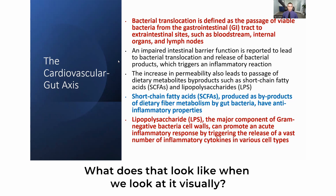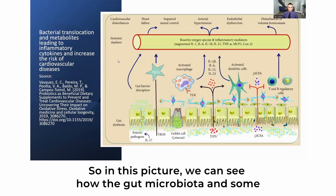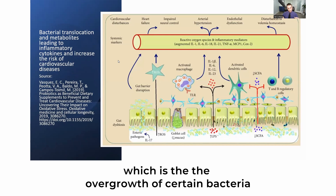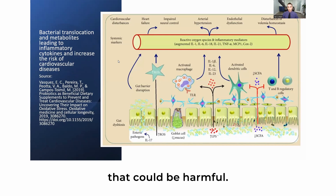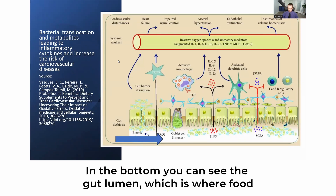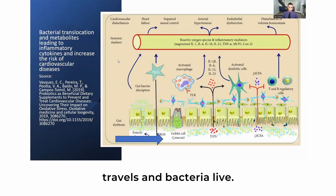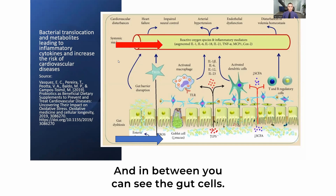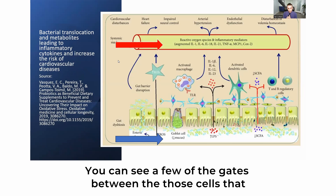In this picture, we can see how the gut microbiota and relevant molecular pathways connect gut dysbiosis — the overgrowth of potentially harmful bacteria — to cardiovascular or cardiometabolic diseases. At the bottom, you can see the gut lumen where food travels and bacteria live. At the top are the blood vessels, and in between are the gut cells with the gates between those cells that keep bacteria and food in the lumen.